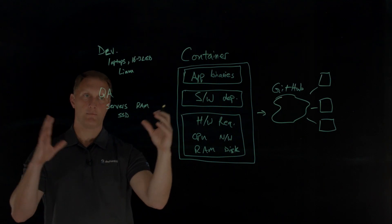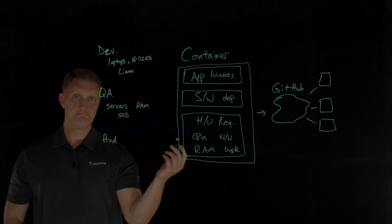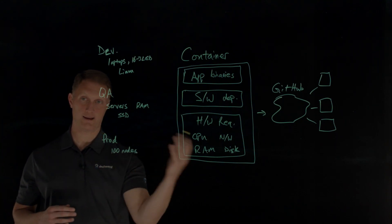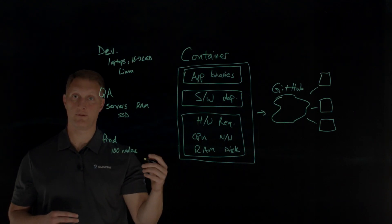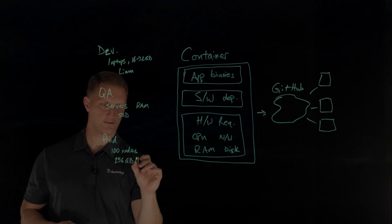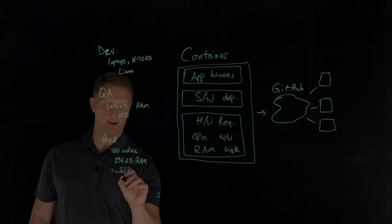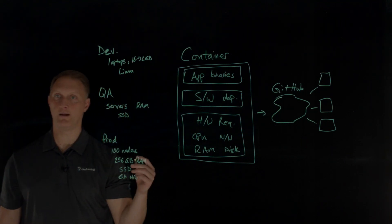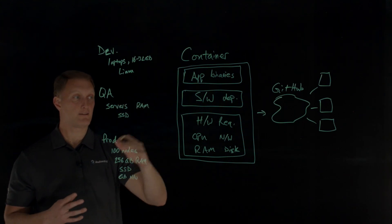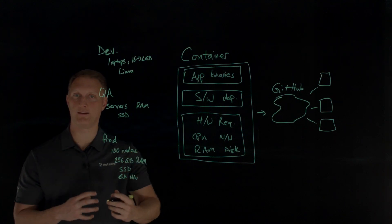After QA is done, they kick it over to production — the live production environment. In this example, there's a distributed cluster with around a hundred nodes, using a variety of operating systems like CentOS, with 256 gigabytes of RAM, SSD drives, and gigabit network bandwidth cards — really high-end hardware. Again, the application is going to run exactly the same because the container defines the hardware requirements. It will probably run faster in production than on development or QA systems, but it runs the exact same way.